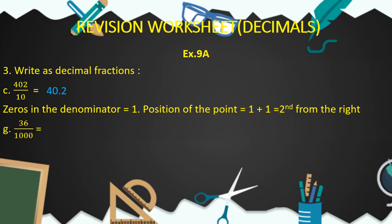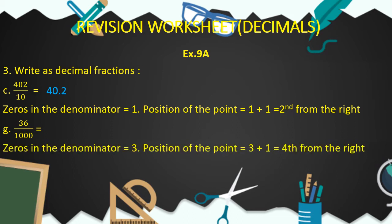Now let's come to part G of question number 3. Here the common fraction is 36 upon 1,000. We have to write this common fraction as a decimal fraction. The number of zeros in the denominator is 3, therefore the position of the decimal point is equal to 3 plus 1, that is 4th from the right hand side. Our decimal fraction is 0.036, and the position of the decimal point is 4th from the right hand side.